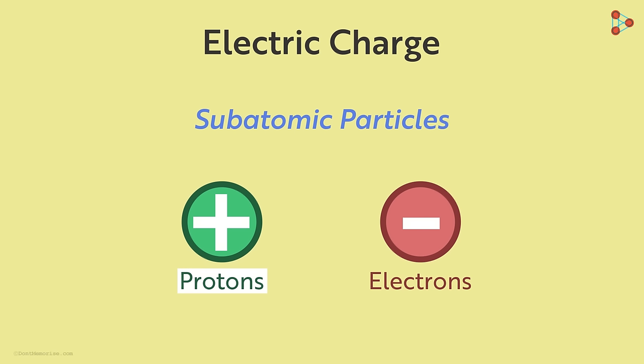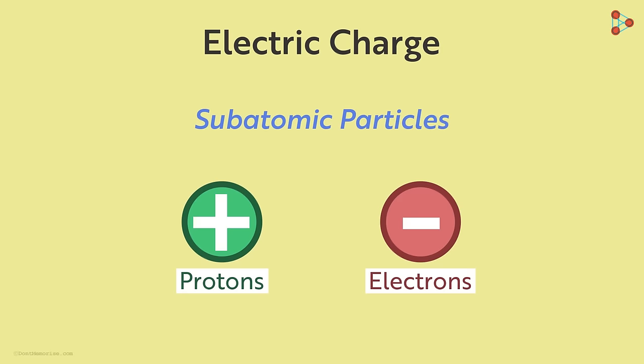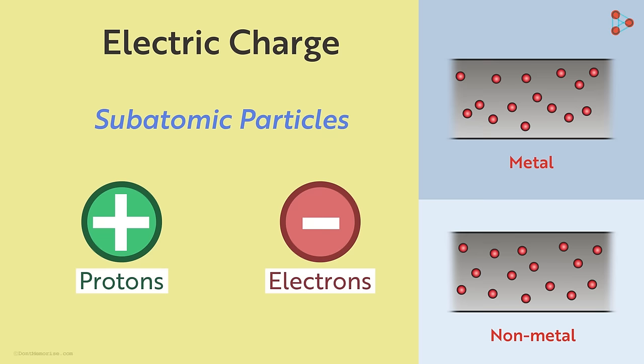There are billions and trillions of protons and electrons present in any object around us. In some objects like metals, electrons can move randomly. While in non-metals, their position is kind of fixed and hence they cannot move freely.